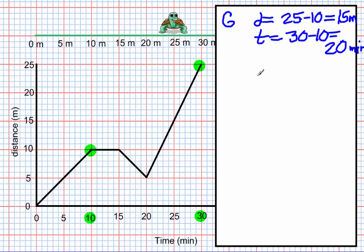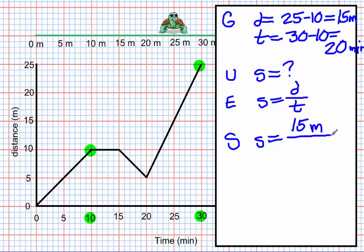Okay, what is our unknown is speed. Our equation S equals D over T. And then let's substitute. So S is equal to, our distance is 15 meters. Our time is 20 minutes.